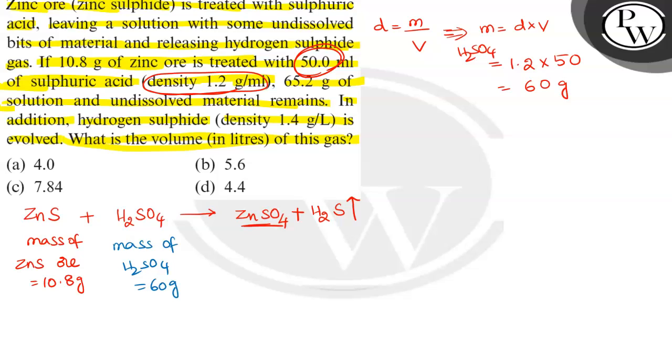Now, what is the total mass of reactants? Total mass of reactants is equal to 10.8 plus 60, that is equal to 70.8. That's the reactants.